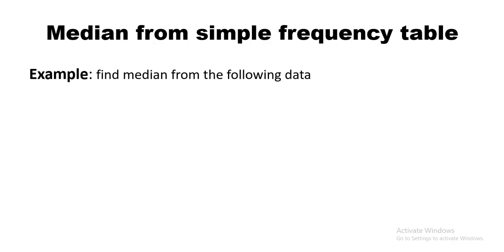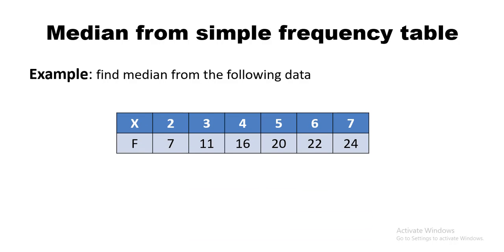Here is the example: Find the median from the following data. As you know, simple frequency distribution means that for each observation there is a corresponding frequency. For observation 2 the frequency is 7, observation 3 is 11, observation 4 is 16, observation 5 is 20, observation 6 is 22, and observation 7 is 24. We need to find out how to find the median from this simple frequency distribution.